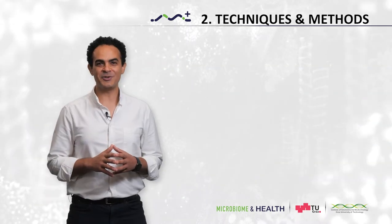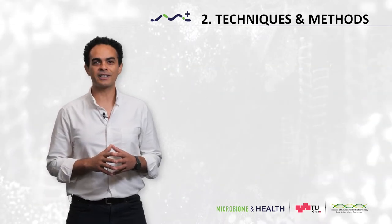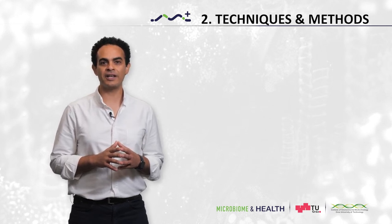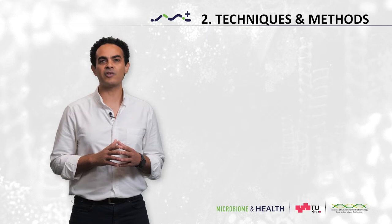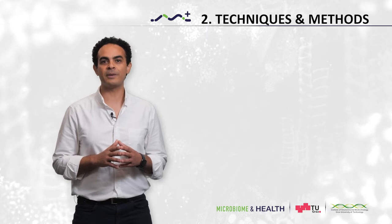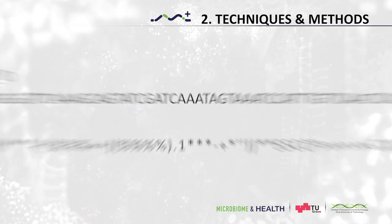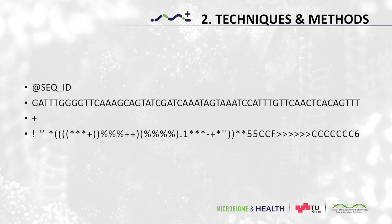As anything produced by a machine, quality of the product needs to be assessed. Sequencing platforms calculate the error rate of each sequence and record it in a format called FASTQ. As you can see here, the quality is written underneath each base, not in numbers but rather in ASCII code. This ensures that there is only one symbol for each base.